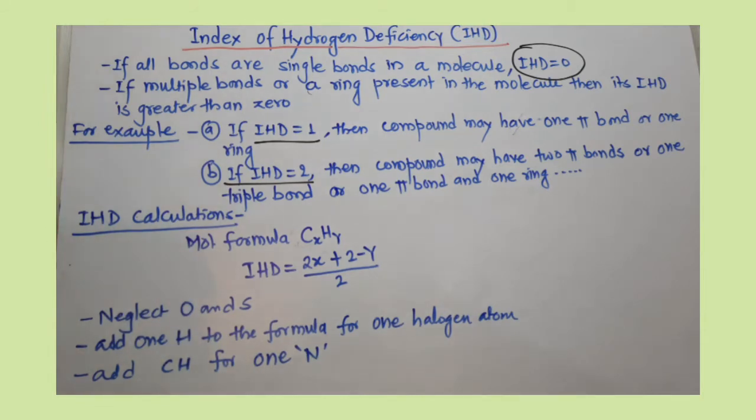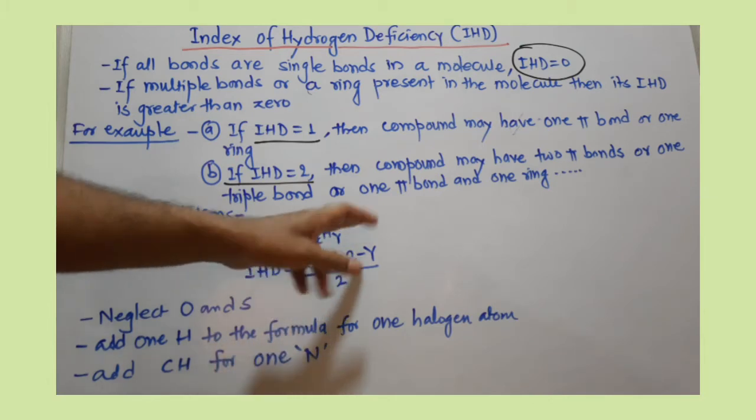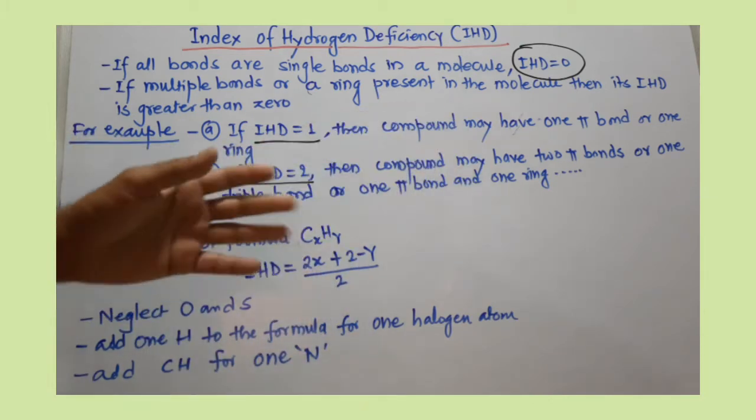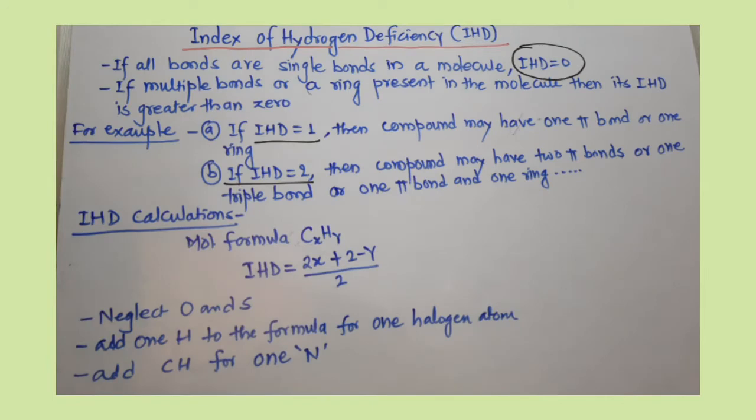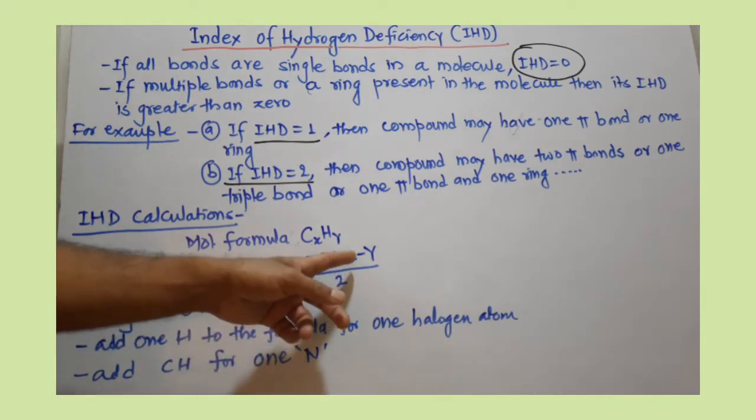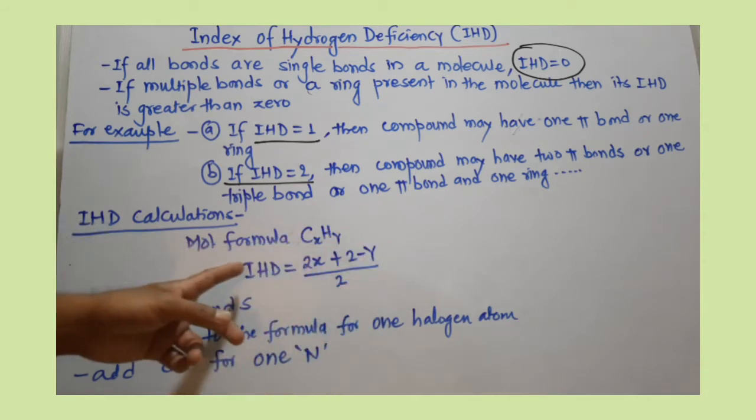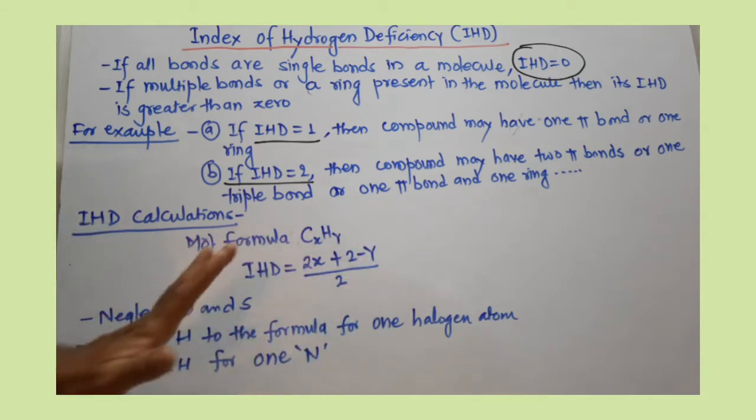I am moving toward the next part of this topic, that is how IHD is calculated. To calculate IHD, suppose the molecular formula is CxHy. I am omitting other heteroatoms present in the molecule. The formula is (2x + 2 - y)/2. By using this formula, you can easily find out IHD.